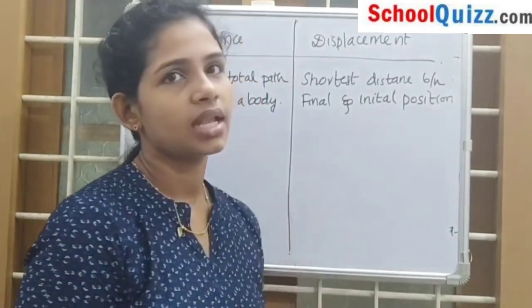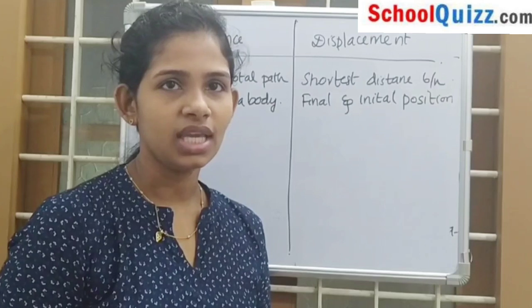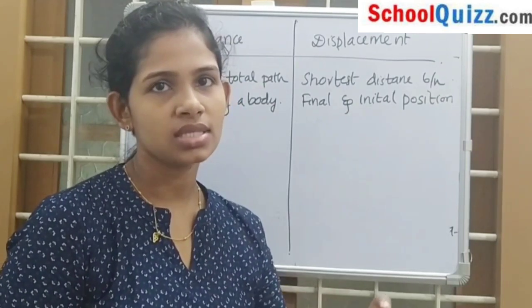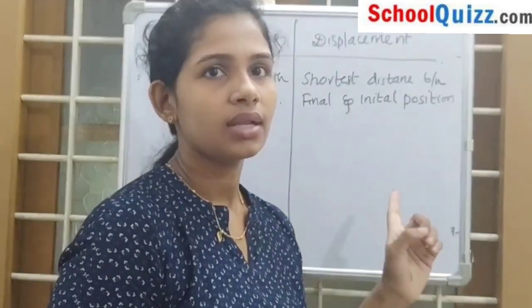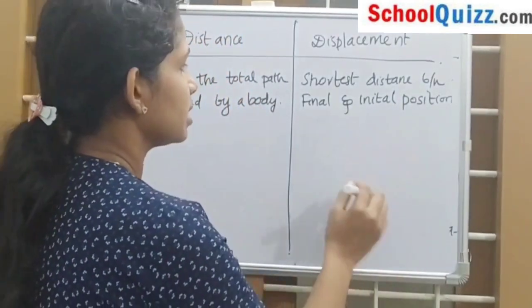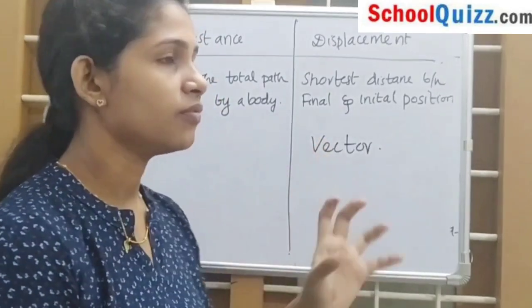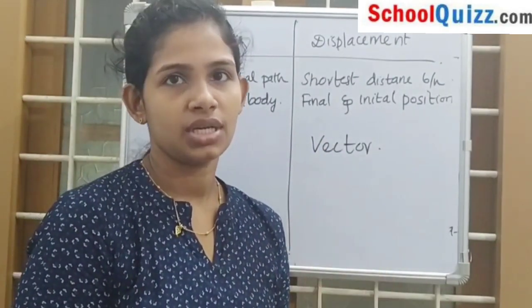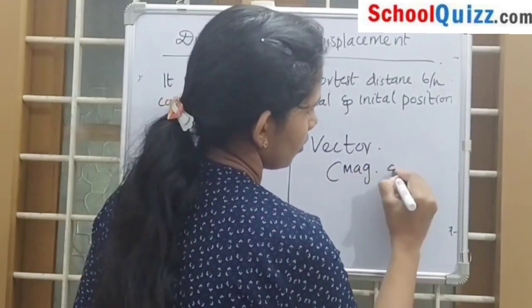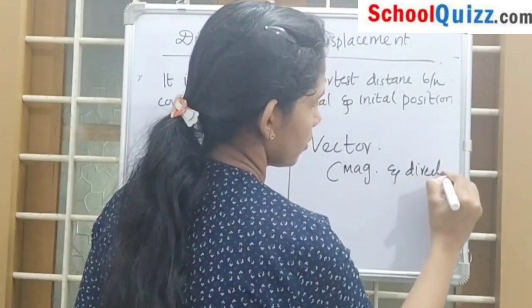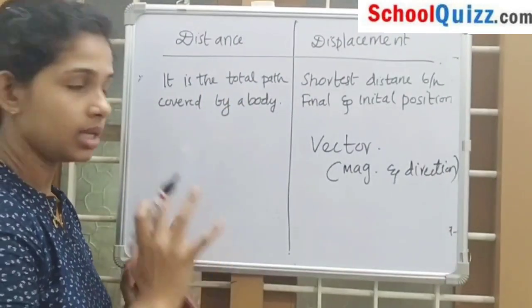Distance is a scalar quantity and displacement is a vector quantity. What are scalars and vectors? A physical quantity which has magnitude only is known as a scalar quantity. If we measure direction also, it is a vector. So displacement is a vector quantity. In the case of displacement, we have to measure both magnitude and direction. In the case of distance, we measure only the magnitude.